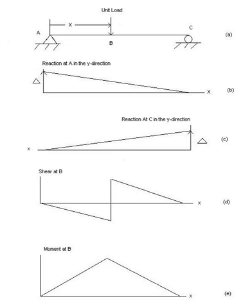Part of the figure to the right shows a simply supported beam with a unit load traveling across it. The structure is statically determinate. Therefore, all influence lines will be straight lines.